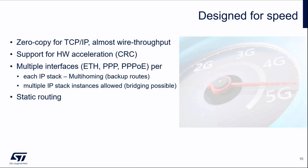Designed for speed also because it supports hardware acceleration on STM32, for example for CRC (cyclic redundancy check). Multiple interfaces are supported — for example, one public address for normal operation and another private address for debugging, statistics, and so on. This also improves security by not fully exposing all features to the outside world. Multi-homing is also implemented, allowing you to build and fine-tune your application and then decide which physical channel to use.